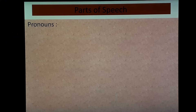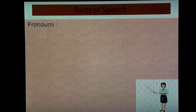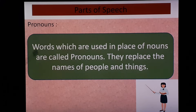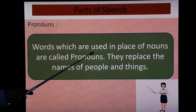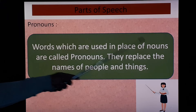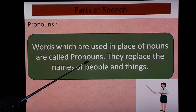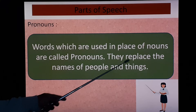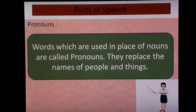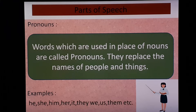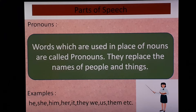Today we are going to start pronouns. Words which are used in place of nouns are called pronouns — they replace the names of people and things. Examples of pronouns include: he, she, him, her, it, they, we, us, them, and so on.